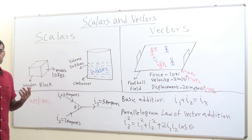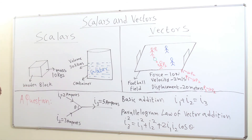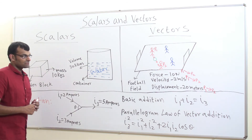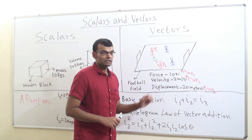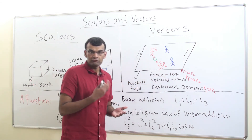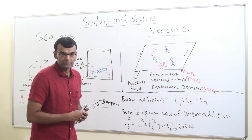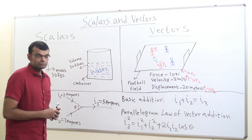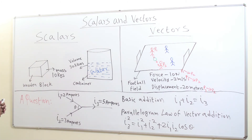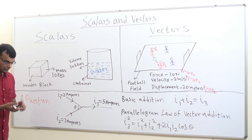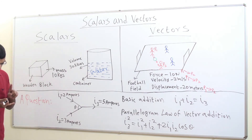Before concluding, there is a question that students generally ask: what if a quantity has only direction and magnitude — can we call it a vector? It is not possible, because as per the definition of a vector, a physical quantity can be considered a vector only if it has magnitude, direction, and obeys the parallelogram law of vector addition.